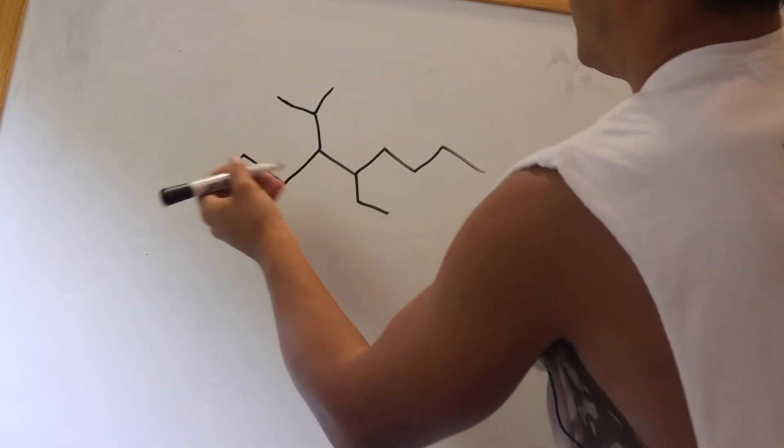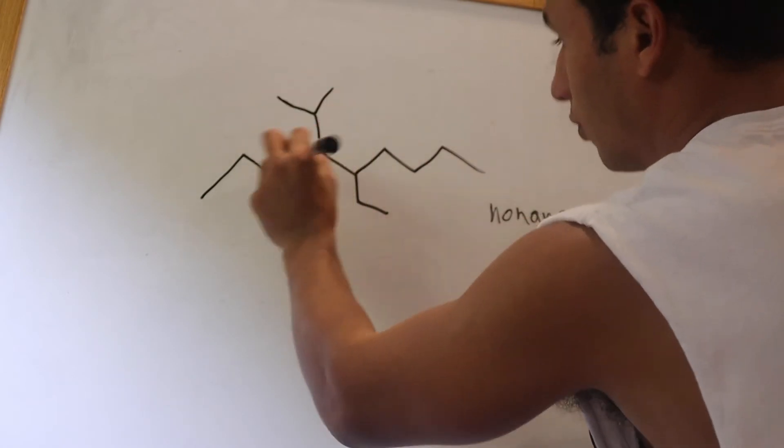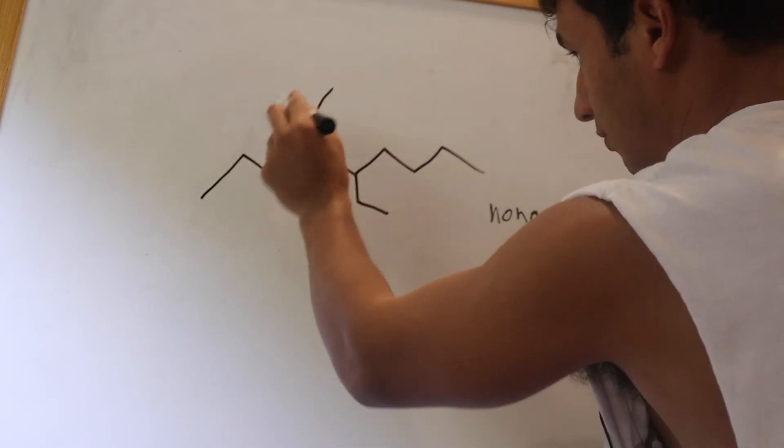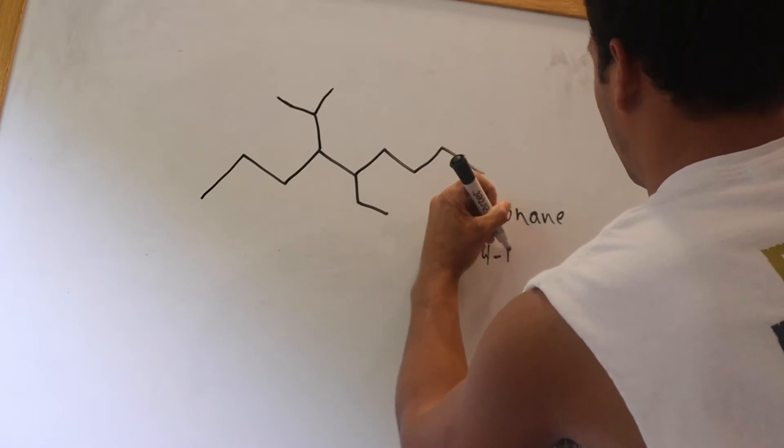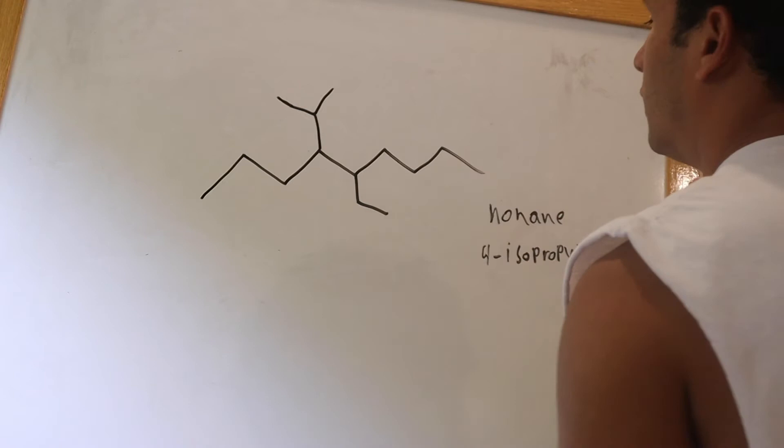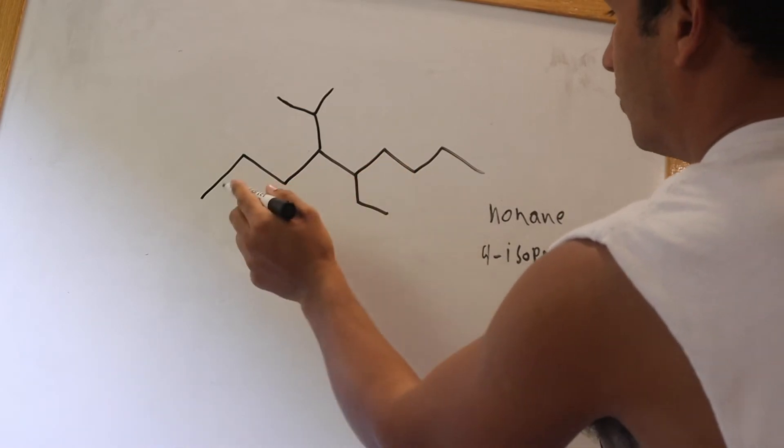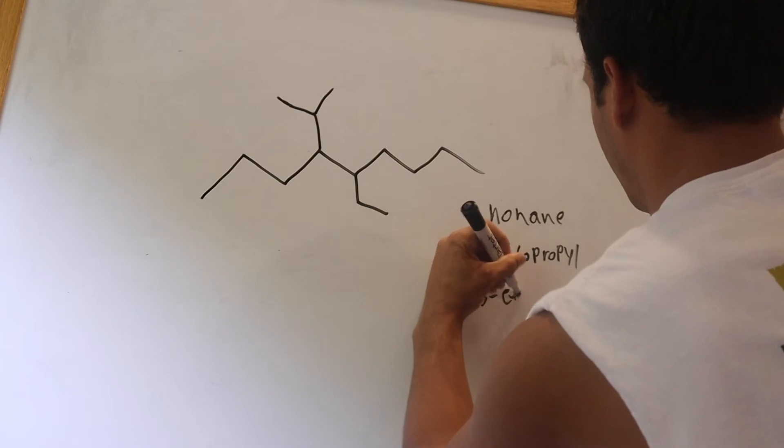So here's how we're going to do that. So we know 1, 2, 3, 4. So this is an isopropyl group, that isopropyl group is on carbon 4, 4-isopropyl. And then this ethyl group, 1, 2, 3, 4, 5, is on the fifth carbon, 5-ethyl.